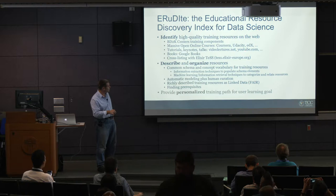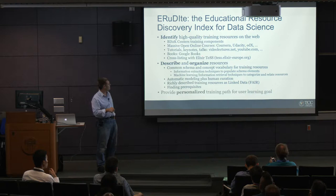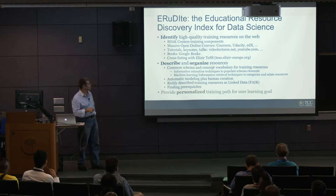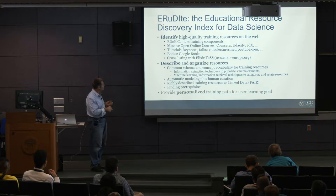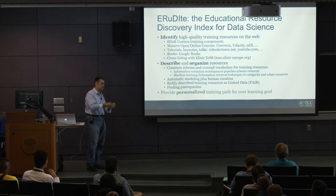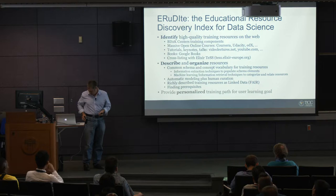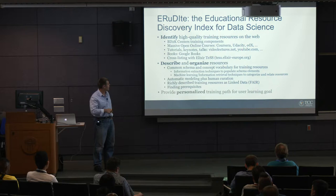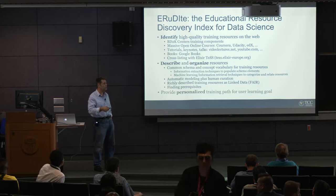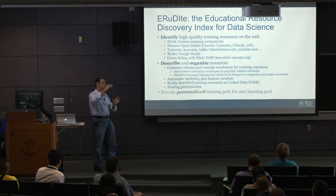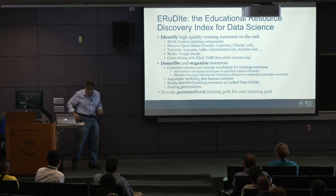Resources came from video lecture sites, YouTube, and other projects in Europe — specifically a large project called Elixir integrating biomedical data in Europe, which had a similar project. We cross-listed some resources with them. Beyond identifying them, we described them. We mapped all this data, constructed from different sources, to a common schema. We tagged the videos — for example, this video is about deep learning or probabilistic graphical models — and created an ontology with about 100 concepts. We automatically labeled all these videos using machine learning, and also ran everything through human curation.